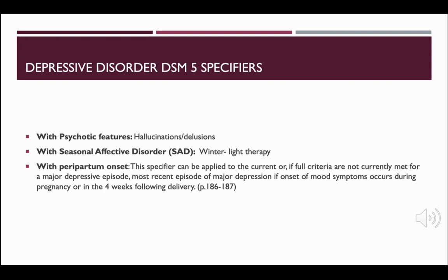Depressive disorders may also have specifiers added to them in the DSM-5 classification. Sometimes depression can become so bad that the individual has psychotic features such as hallucinations or delusions. They also might experience seasonal affective disorder, which most often occurs in winter and can be treated with light therapy. Depression with peripartum onset is a specifier that can be applied if the mood symptom occurred during pregnancy or in the four weeks following delivery.